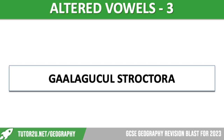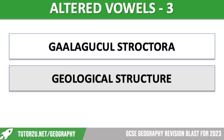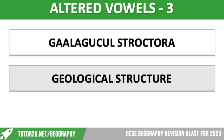This next one is quite tricky, but it has a massive impact on how that coastline shapes and the type of landforms that you might find there. It is the geological structure. The geological structure refers to the different types of rocks found in those coastlines and whether they are discordant or concordant — whether the rocks all line up. It has a huge impact on the rate of erosion, but also the types of landforms you will find.